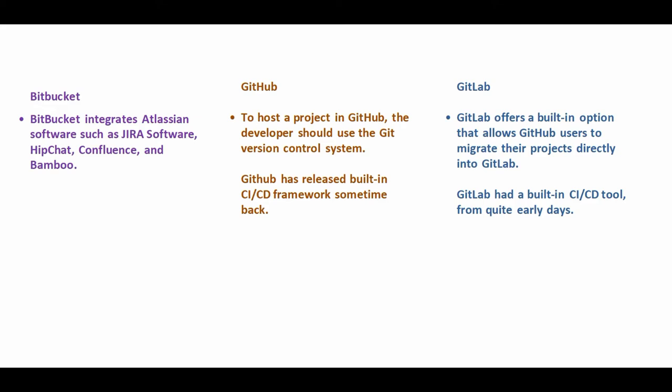To host a project in GitHub, the developer should use the Git version control system. GitHub has also released a built-in CI/CD framework. GitLab offers a built-in option that allows GitHub users to migrate their projects directly into GitLab, and GitLab had a built-in CI/CD tool from quite its early days.